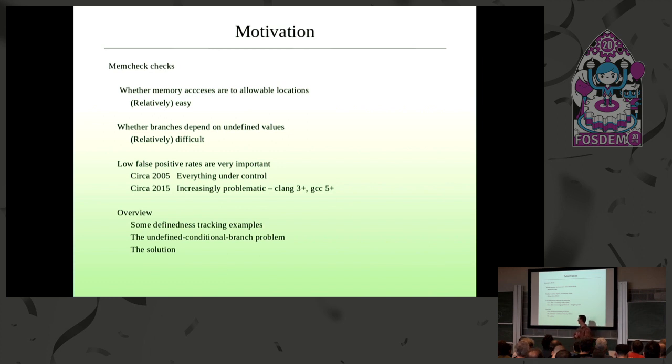So as a summary of the rest of the talk, I'll talk a little bit about some definedness tracking examples. And like I say, I apologize for repeating myself from the talk two years ago. Then I'll talk about the core problem today, which is that compilers actually generate branches on undefined values in some circumstances, strange though it sounds. And I'll show you what my solution to this was.